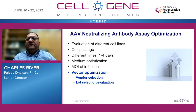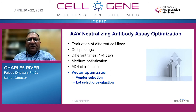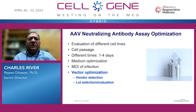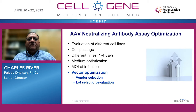For AAV neutralizing antibody assay optimization — before we developed these assays, a lot of optimization was performed, including evaluation of cell lines, cell passages, medium optimization, and time of incubation, which can vary from one to four days. We also evaluated multiplicity of infection (MOI). Most important of all, however, is vector optimization — vendor selection and evaluation of a particular lot of vector.